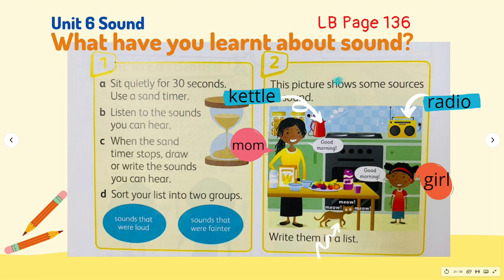Number two, this picture shows some sources of sound. Remember, sources of sound are things that make sounds. So what are these? You can see here the radio, kettle whistling, a parent and a child talking — they're saying good morning — and a cat meowing under the table.